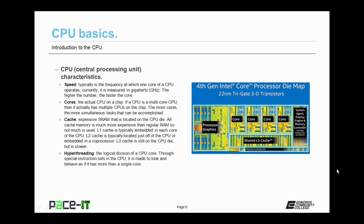So now let's talk about the central processing unit, the CPU. The first characteristic of it is speed. Speed typically is the frequency at which one core of the CPU operates. Currently it's measured in gigahertz per second. The higher the number, the faster the core.